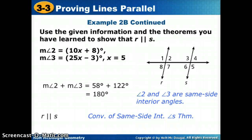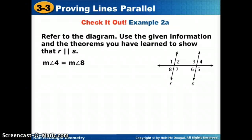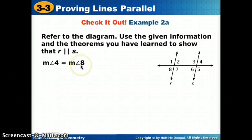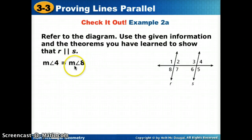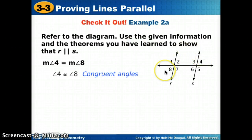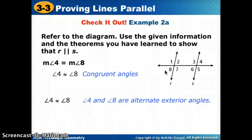Notice that anytime we're proving lines parallel, we're going backwards and using the converse of our statements. The next problem says angle 4 equals angle 8. We need to see that 'equal' is slightly different from 'congruent.' To be equal in measure means they are congruent by the definition of congruent angles. Now that we've said the angles are congruent, we look at the picture: angles 4 and 8 are alternate exterior angles. So we can say the lines are parallel because of the converse of the alternate exterior angles theorem.